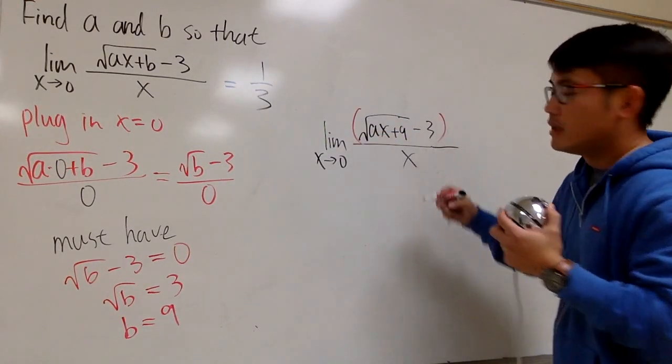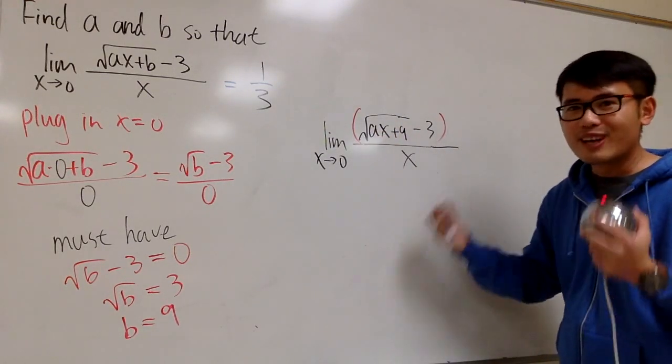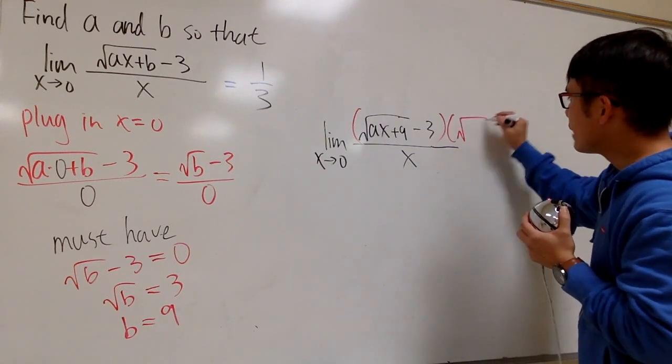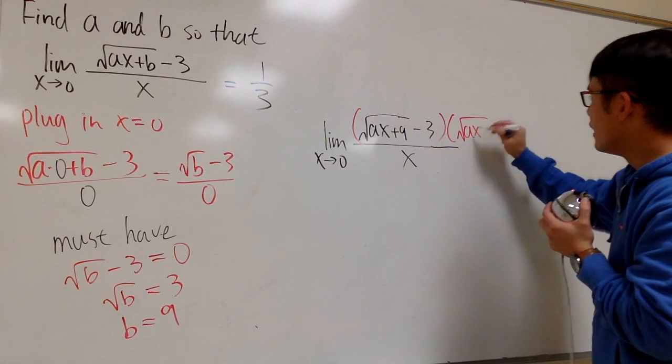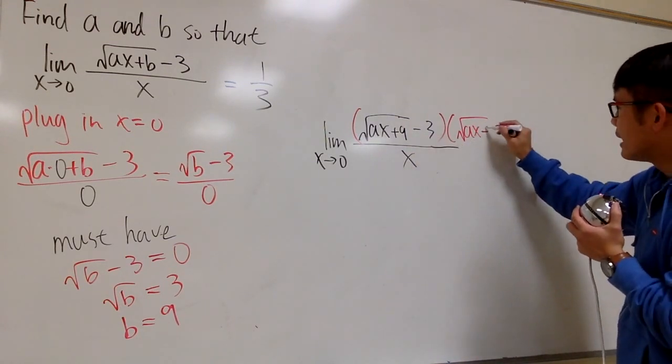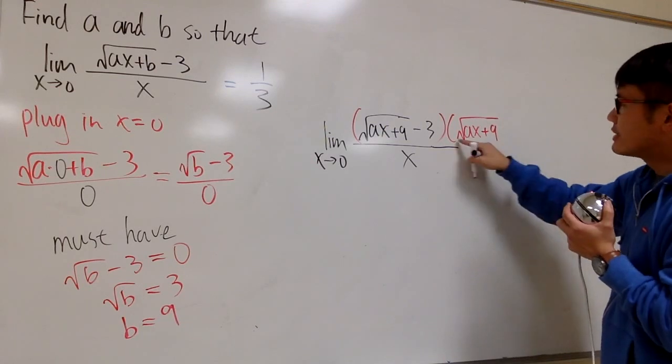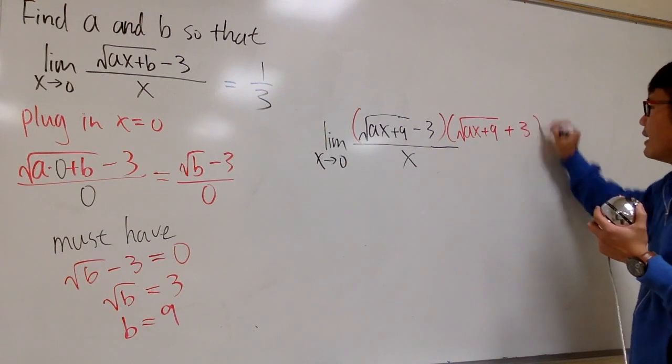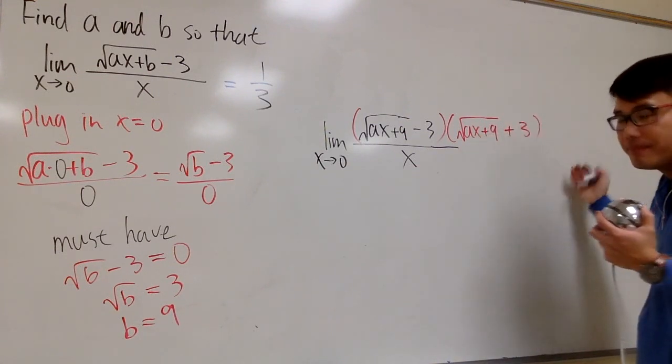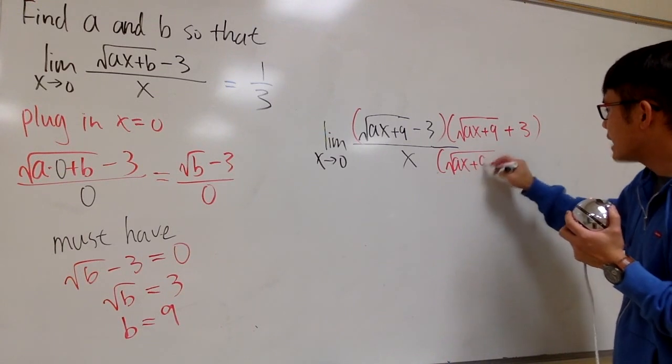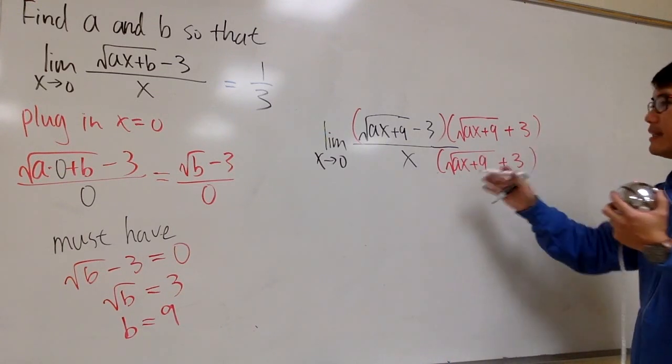Therefore, let's do that. Multiply the top and bottom by square root of ax plus 9, that's the first part, but then we'll change this to be a plus, that's the conjugate. And we do this on the top, and we also do the same on the bottom. Square root of ax plus 9 plus 3, like this.